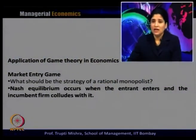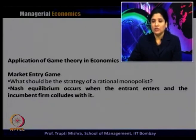What should be the strategy of the rational monopolist, and where does Nash equilibrium generally occur? Nash equilibrium occurs when the entrant enters and the incumbent firm colludes with it. In this case, if you remember the payoff matrix, that is the scenario where both of them are getting a market share. In all the other three options, either one of them is getting zero or a minus. But when the new firm enters and the existing firm colludes, that market share is more preferable for both the monopolist and the new firm if they are acting rationally.